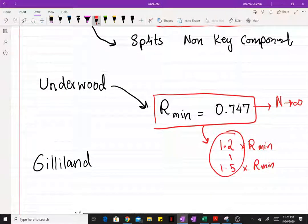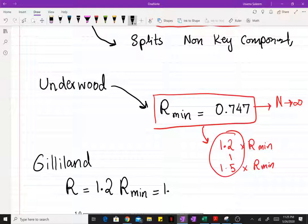Which in our case would be 1.2 times 0.747, and that comes out to be, hold on I got my calculator here.